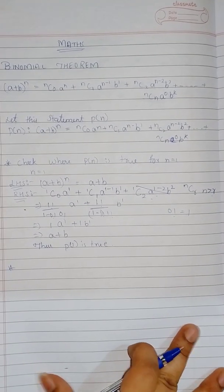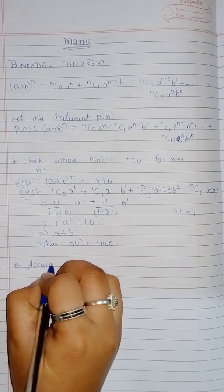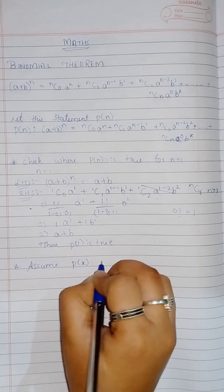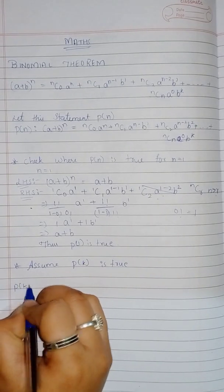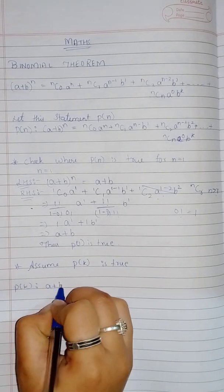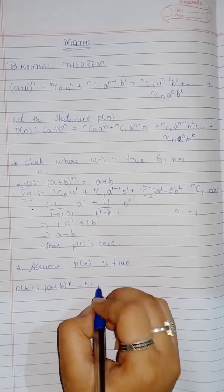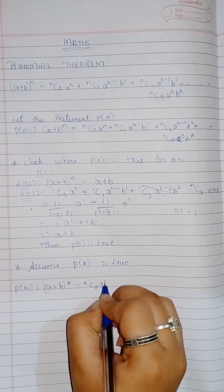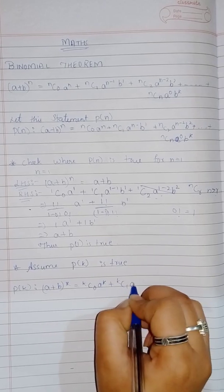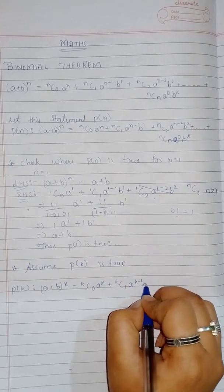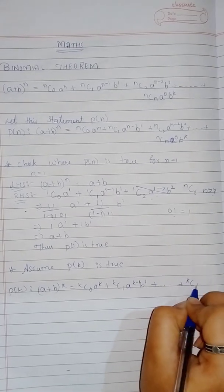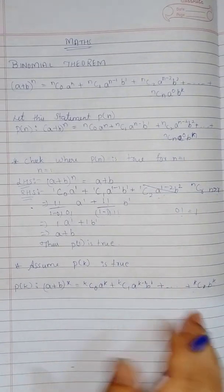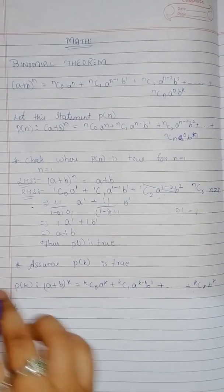The second step is to assume that P(k) is true. In place of n we substitute k, so: (a + b)^k = kC0·a^k + kC1·a^(k-1)·b^1 + ... + kCk·b^k. So the second step is also complete.